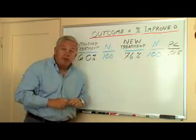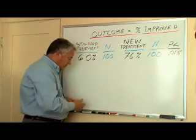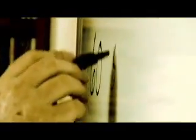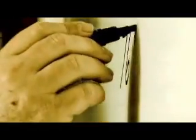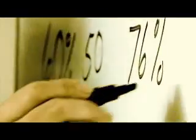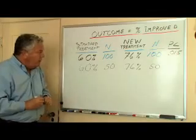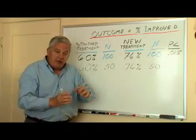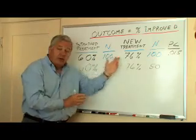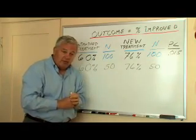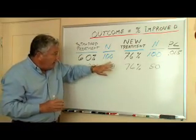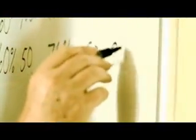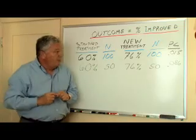So in this case, we'd probably say the new treatment seems to be doing better. Now, what if we have a sample size of 50 instead of 100? I have the same 60%, but my sample size is now 50. I have the same 76% for the new treatment, but my sample size is now 50. The estimates are the same, except the sample size is smaller. The larger the sample size, the more precisely you get your estimates; the smaller the sample size, the less precisely you get your estimates — meaning you don't know as much. So you probably have less evidence for rejecting the null hypothesis. In fact, the p-value from our hypothesis test gives us 0.086.